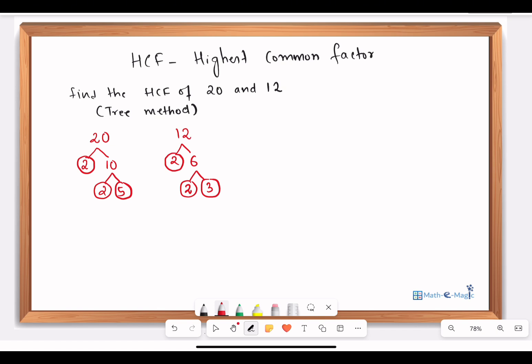Now 20 can be written as 2 times 2 times 5, and 12 can be written as 2 times 2 times 3. In order to find HCF, we will look at only the factors that are common to both 20 as well as 12.